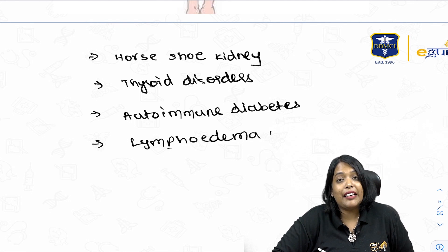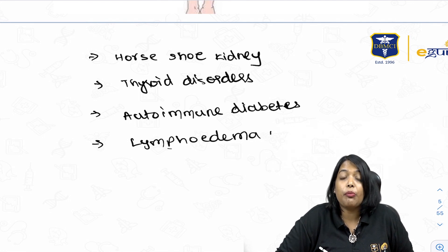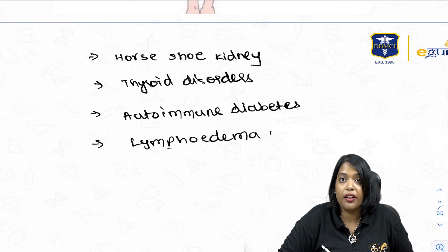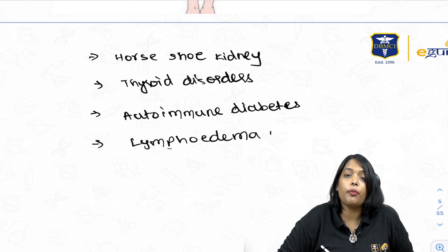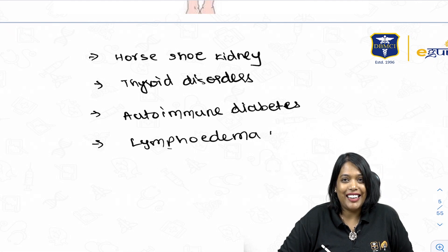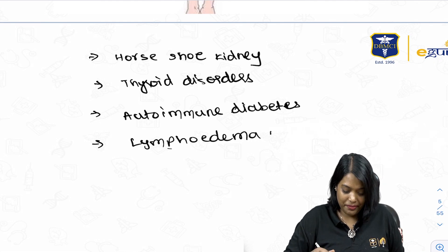Turner syndrome is the most common cause of primary amenorrhea. Gonadal dysgenesis is the most common cause, and the most common gonadal dysgenesis leading to primary amenorrhea is Turner syndrome.